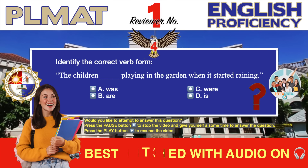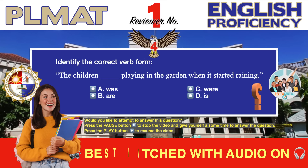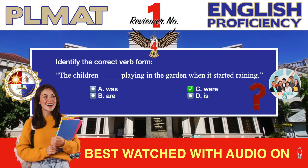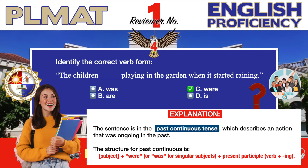Question number four. Identify the correct verb form. 'The children, blank, playing in the garden when it started raining.' A. Was. B. Are. C. Were. D. Is. The correct verb form is 'were,' so the correct answer is C. The sentence should read: 'The children were playing in the garden when it started raining.' The sentence is in the past continuous tense, which describes an action that was ongoing in the past. The structure for past continuous is: Subject plus 'were' (or 'was' for singular subjects) plus present participle (verb plus -ing). The subject 'children' is plural, so the correct form is 'were.'